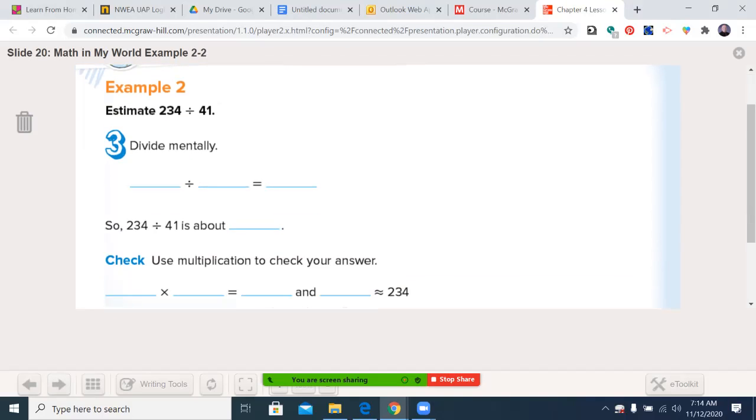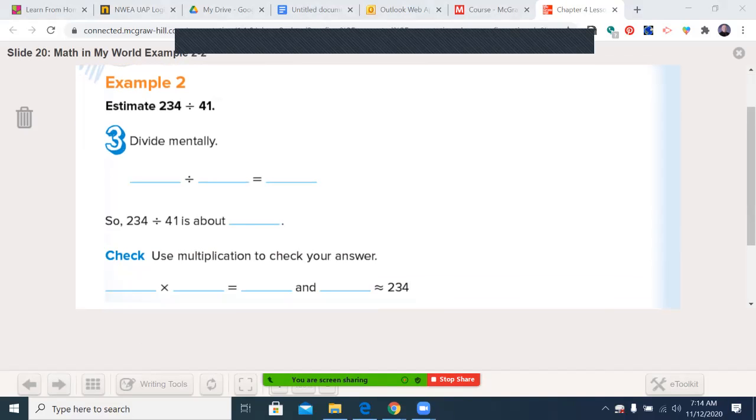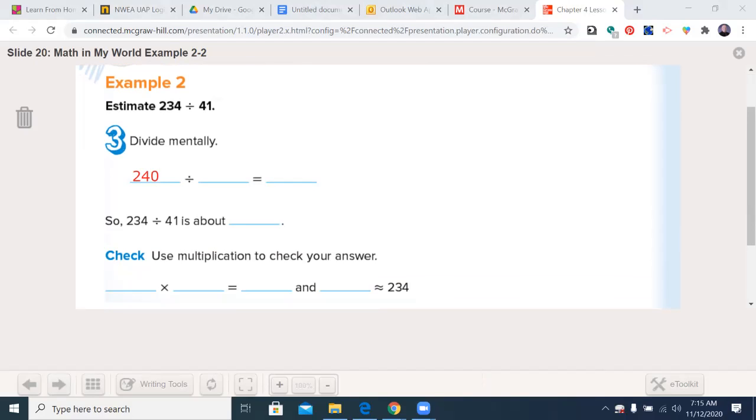You'll see the answers here. Go ahead and use the annotation tool. We said it was 240 divided by 40. 4 goes into 24, six times. Both of those zeros would go away. We get six. So the quotient is about six. Could I check my work? Sure. I could go six times 40 is equal to 240, and 240 is close to 234. Make sure you've written that in.